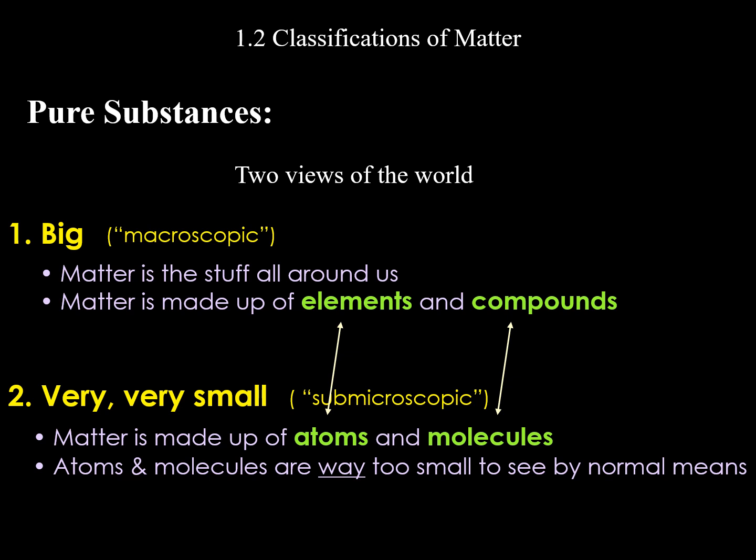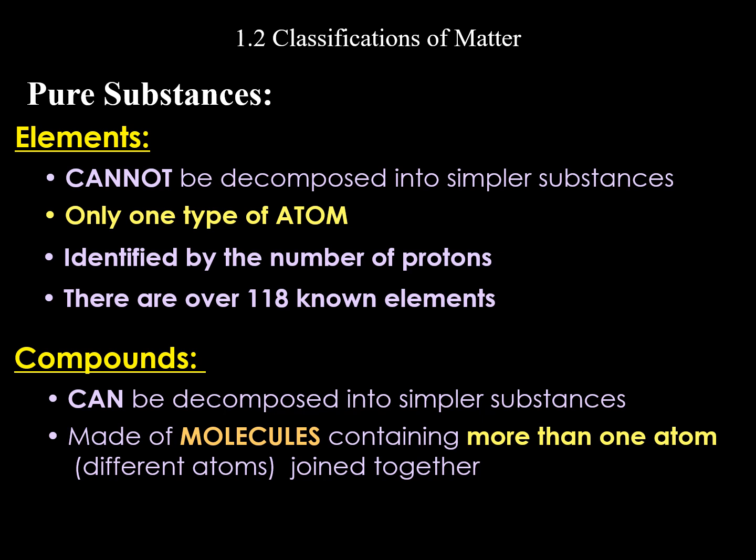We can look at matter at the macroscopic level, but also at the sub-microscopic level of atoms and molecules. If we focus on pure substances, these cannot be decomposed into simpler substances. For this class, we'll say elements are the simplest form. We have compounds, which are made up of elements. We'll speak to the difference between a molecule and a compound, but elements and compounds fall in the pure substance category.